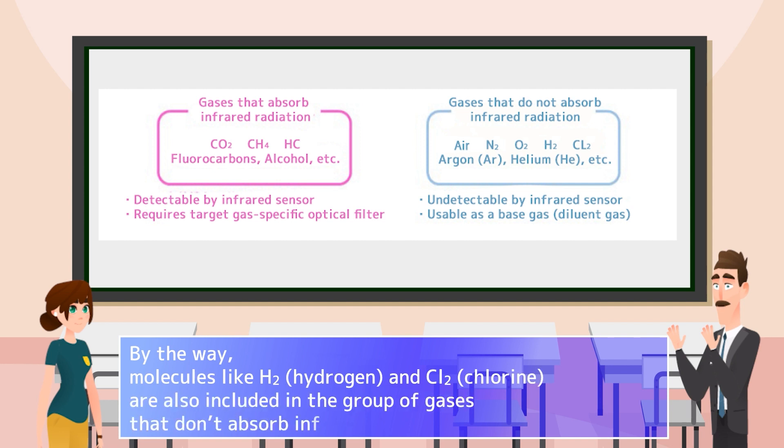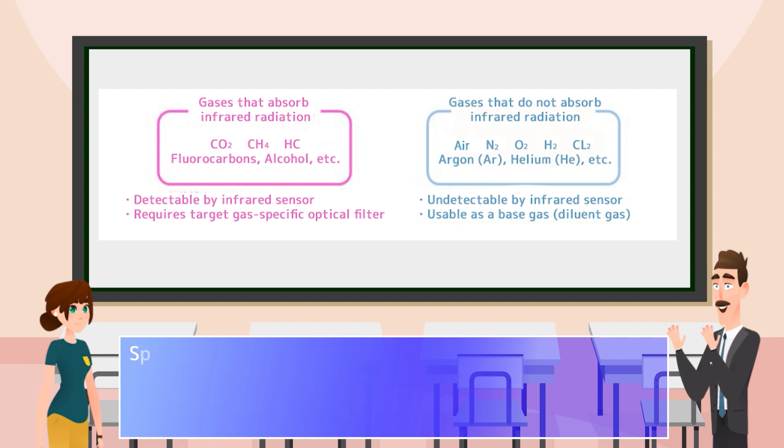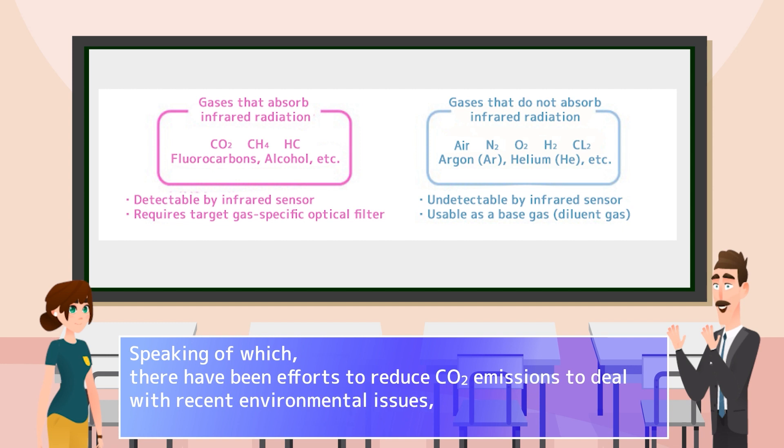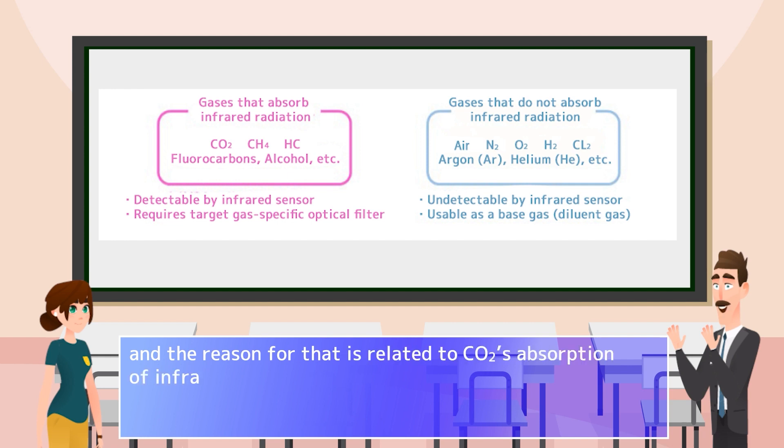By the way, molecules like H2 hydrogen and Cl2 chlorine are also included in the group of gases that don't absorb infrared radiation. Speaking of which, there have been efforts to reduce CO2 emissions to deal with recent environmental issues, and the reason for that is related to CO2's absorption of infrared radiation.